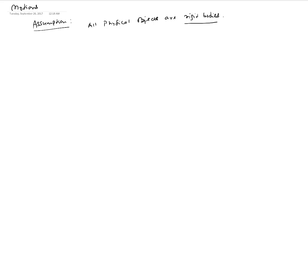Rigid bodies are defined by the fact that if you look at any two points on a physical object, as that physical object moves in space, the distance between the two does not change.